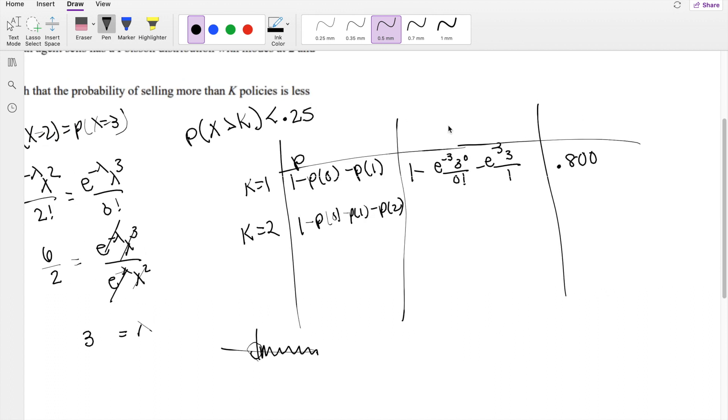From the previous calculation, I just add another term: minus e to the negative 3, 3 squared over 2 factorial. This equals 0.5768, which is still too big.